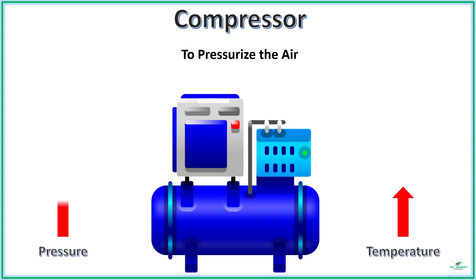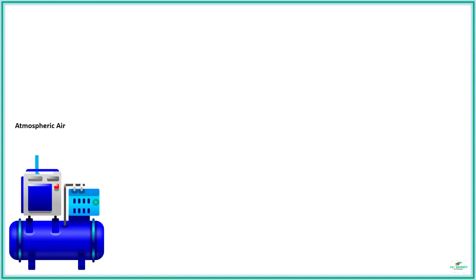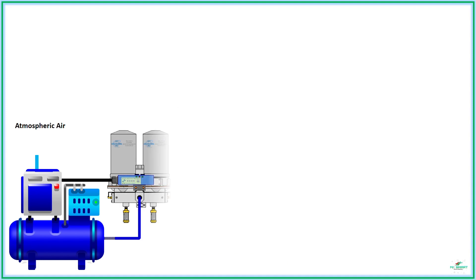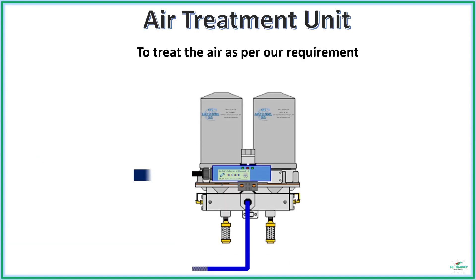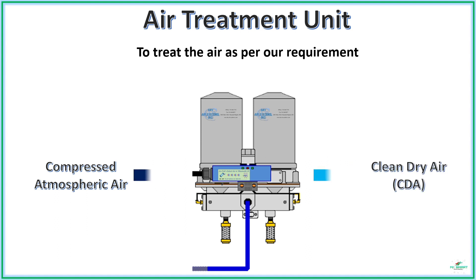For an efficient pneumatic system, the temperature needs to be maintained and the air should flow without any dirt particles. An air treatment unit cools and filters the compressed air, producing a clean dry air, generally referred to as CDA in industries.